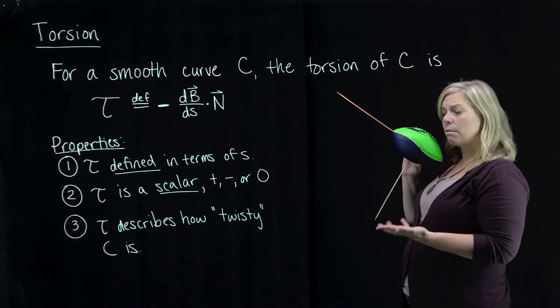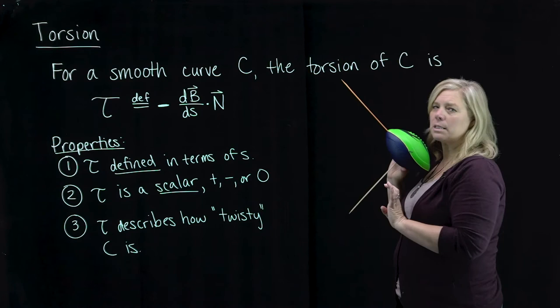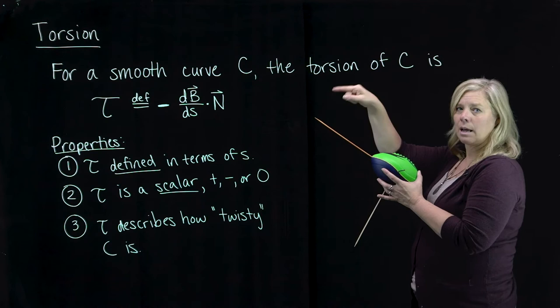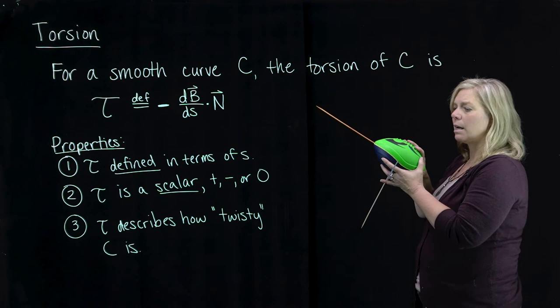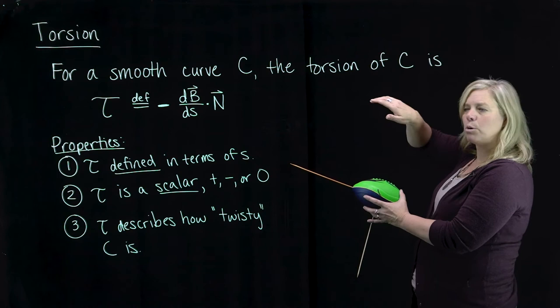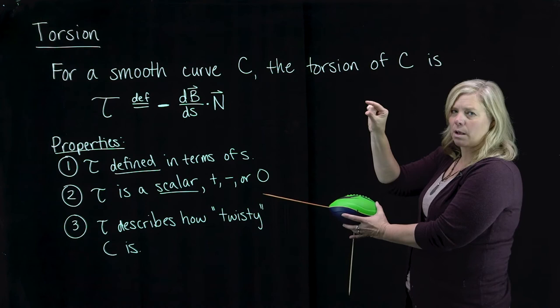Since dB/ds is the zero vector, when we take the dot product with N we get zero the scalar, giving us zero torsion. There's no twist to this motion. But when you throw a football, it doesn't usually go in a perfect parabola — it's supposed to have spin on it. When you think about a football moving with spin along that parabola shape, I'm going to exaggerate the rotation a little so we can really see what's going on — a wobbly spiral.